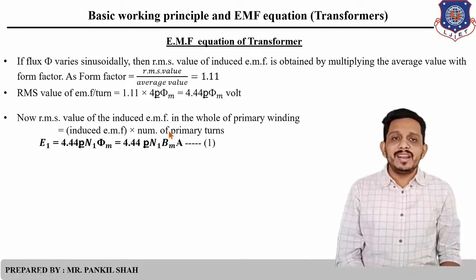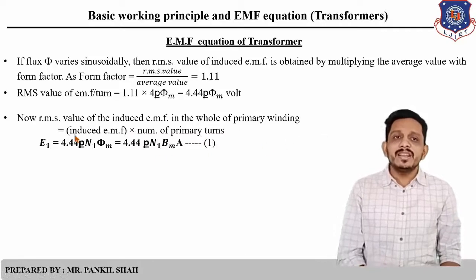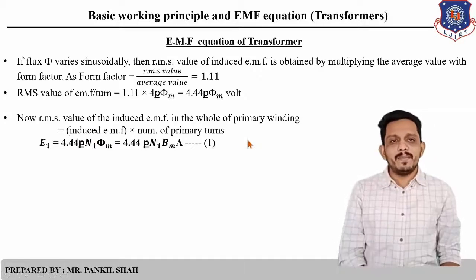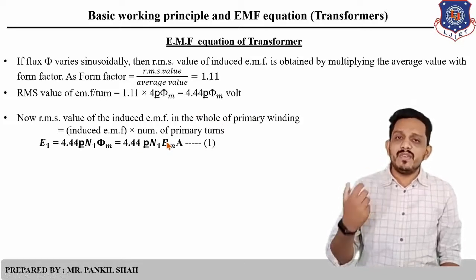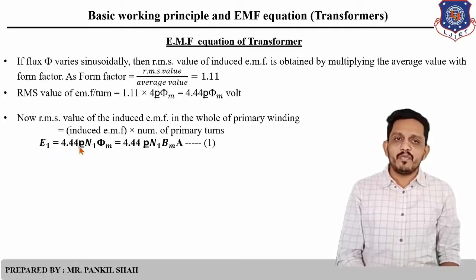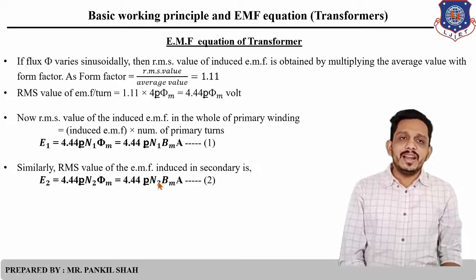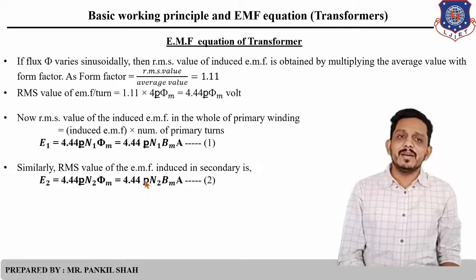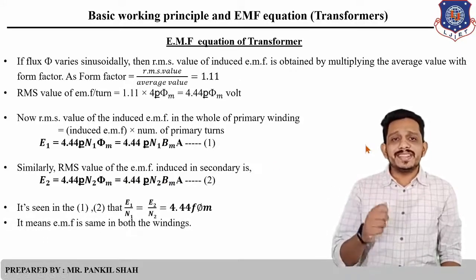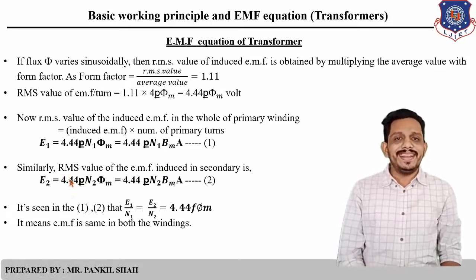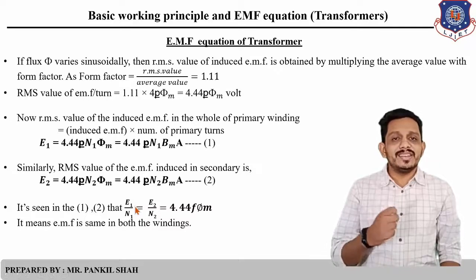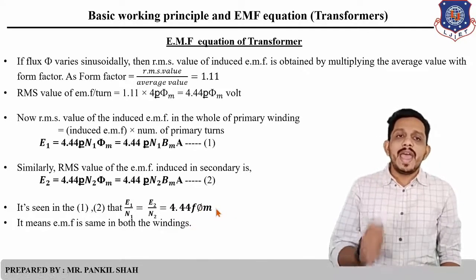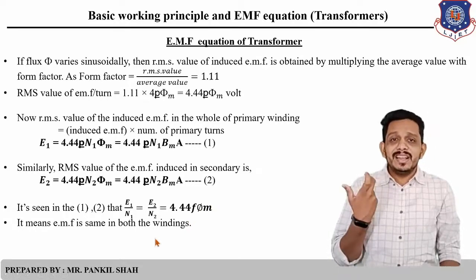To find the RMS value of induced EMF in the whole primary winding, we multiply the EMF per turn by the number of primary turns N1. So E1 = 4.44·F·N1·φm, and instead of φm you can also write Bm × A. Similarly for the secondary winding, E2 = 4.44·F·N2·φm. Taking the ratio of these two equations: E1/E2 = N1/N2. This means the EMF per turn in both windings is the same, equal to 4.44·F·φm.